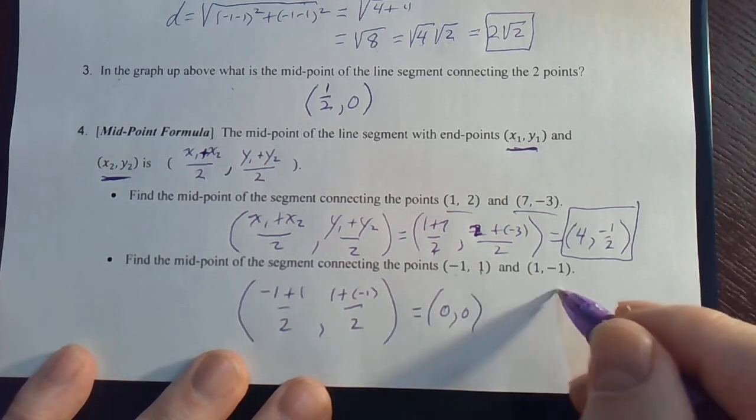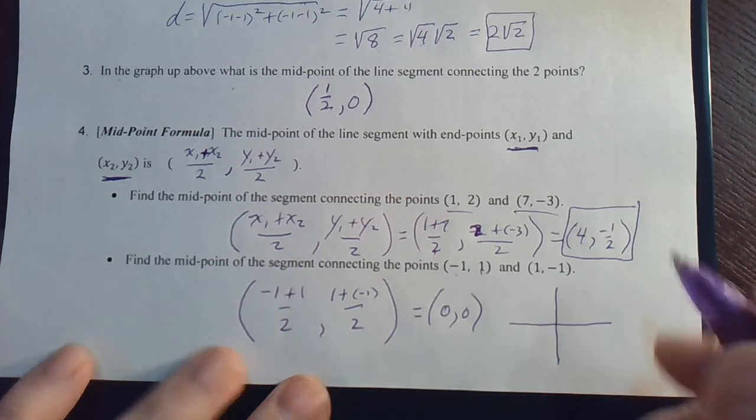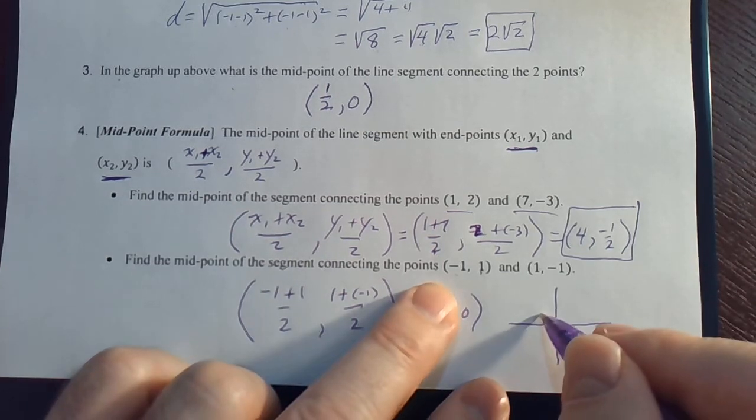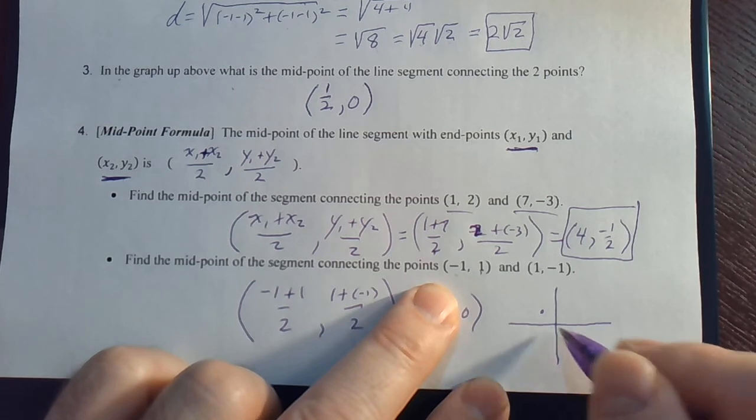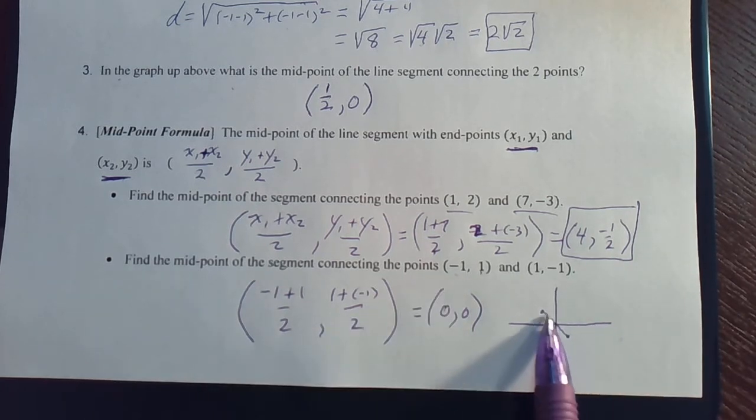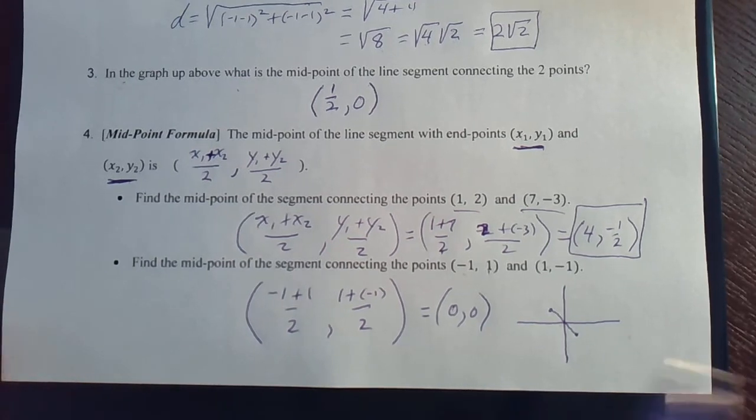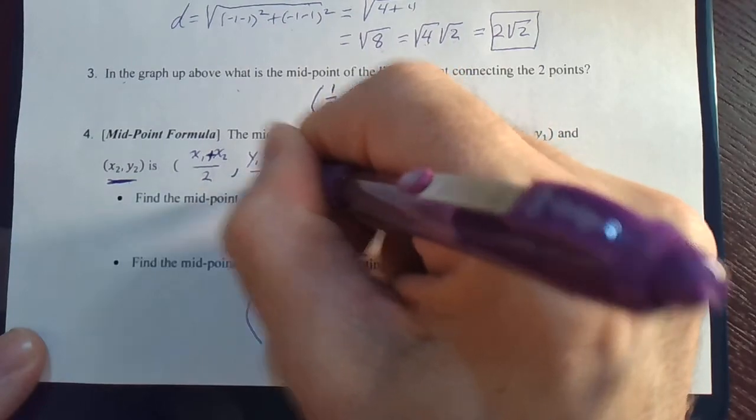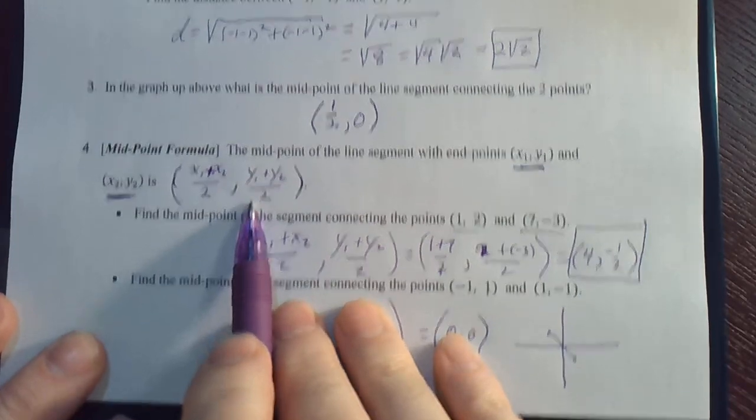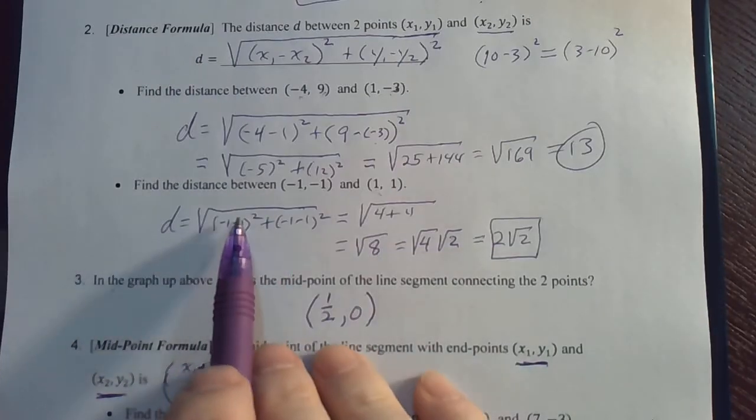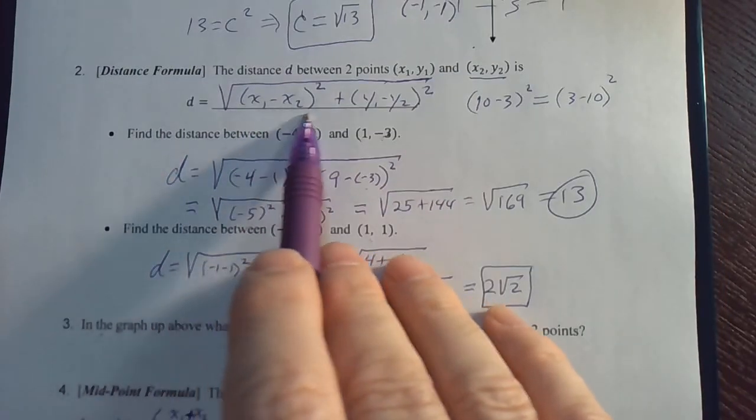And that one's pretty easy. If you graphed it, negative 1, 1 would be this point, and 1 negative 1 would be that point. You can see it's pretty clear that the origin is the point right in the middle of the segment that connects those two points. So, this is the second formula that you should memorize. This is the midpoint formula, and this is the distance formula.